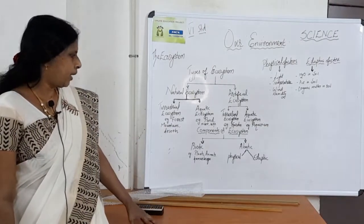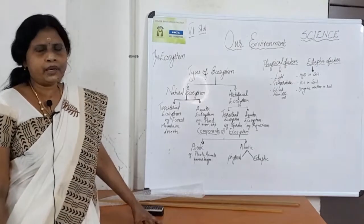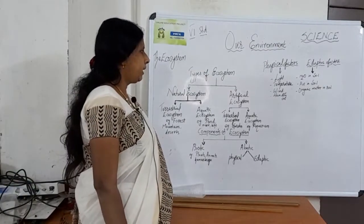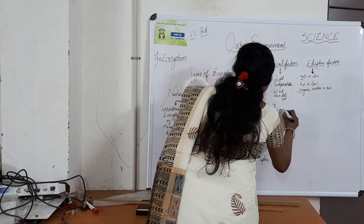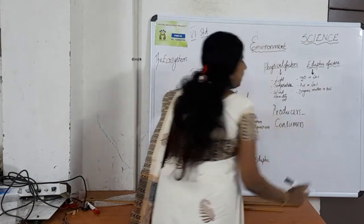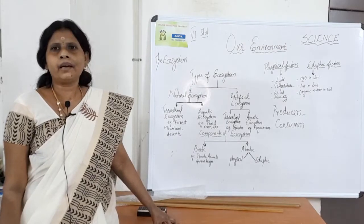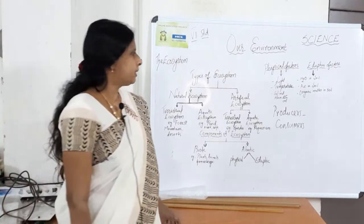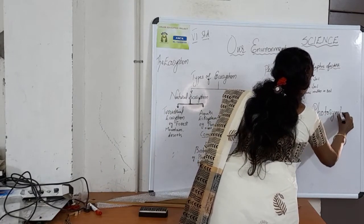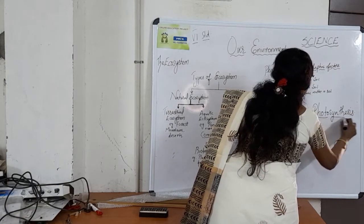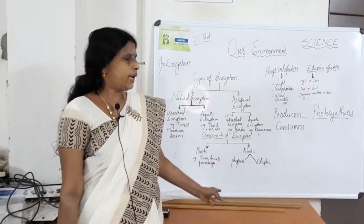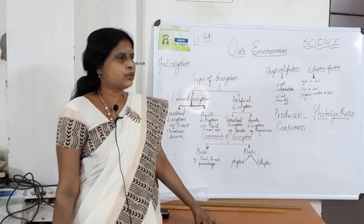Now we are going to elaborately see about the biotic components: plants, animals, human beings, and micro-organisms. All these components are again divided into two categories according to their feeding habit — they are producers and consumers. Green plants are said to be producers because they can prepare their own food. Green plants and other organisms can produce their own food by a process called photosynthesis. So they are called producers.